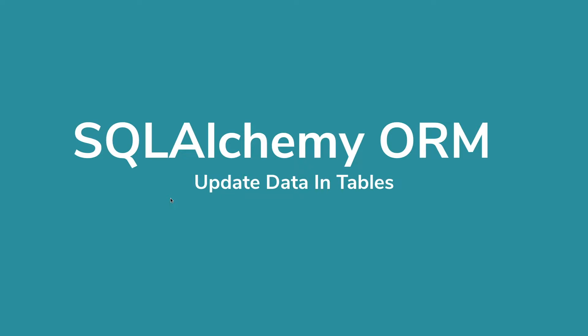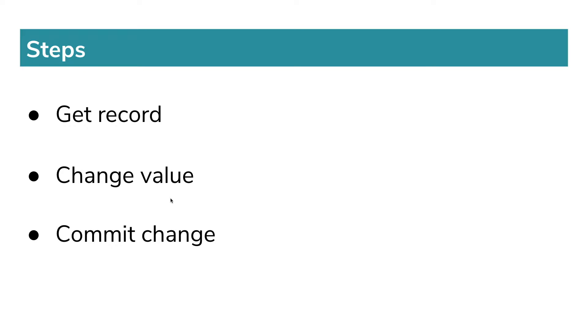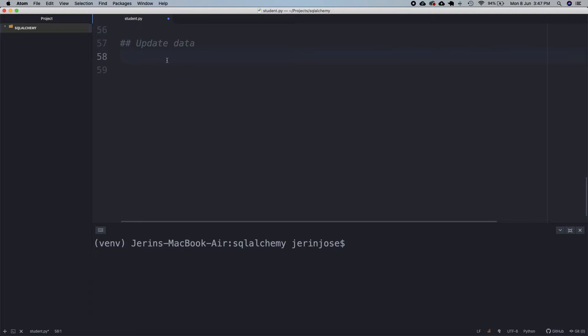For that we need to get the record we want to change, make the change and then commit the change to reflect in the table. Let's code these in the editor. First let's get the record we want to change.